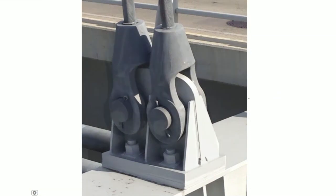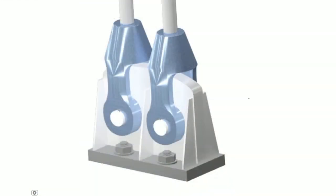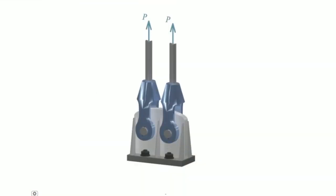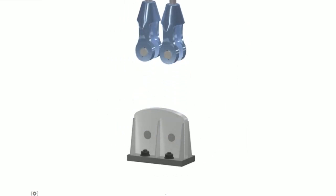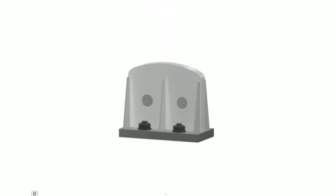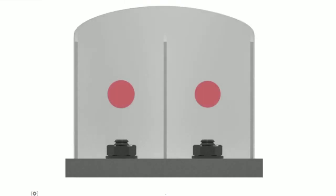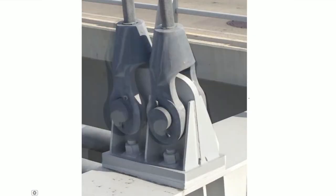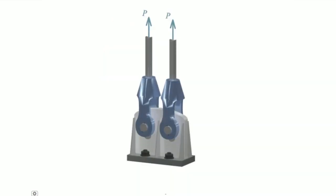This is the 3D model we created, showing the types of failure that may happen on the bolts. Where would the area be where shear is developed? As you can see, the bolt is going to shear. We have two bolts, and each bolt is going to shear twice because we have two connectors on each side of the gusset plate.